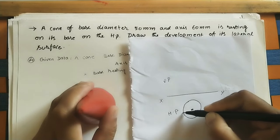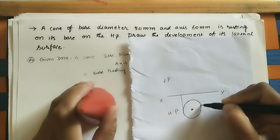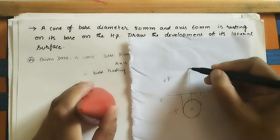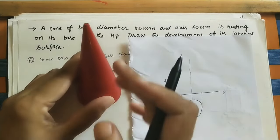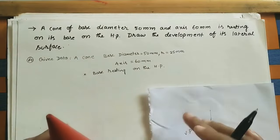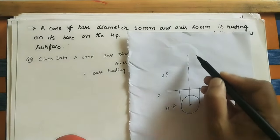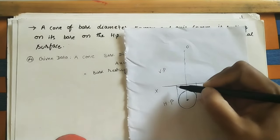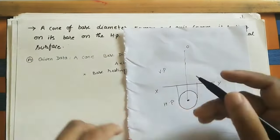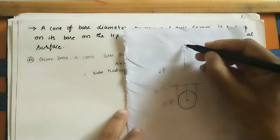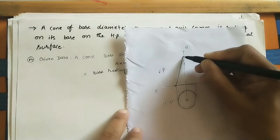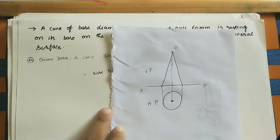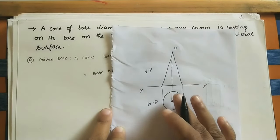We can see the center as well — the center and apex both appear at the center of the circle. This is the top view. For the front view, draw projector lines up to the XY line. In the front view we see the entire height, which is 6 centimeters. Above XY, take 6 centimeters and mark the apex. Join this apex point to the two base points using a scale to get the triangular front view.